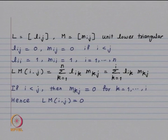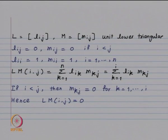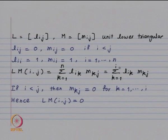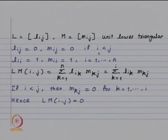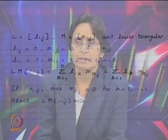For the case i < j, M_kj will be 0 for k going from 1 to i, because for k = 1 to i, j will be bigger than k, and M has the property that M_ij = 0 if i < j. Hence, in this summation, the M_kj terms are going to be 0. So you get (LM)_ij = 0. As with L and M, when you consider the elements (LM)_ij with i < j, they are equal to 0.